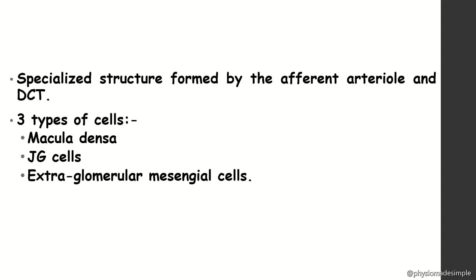Next are the juxtaglomerular (JG) cells, which release a hormone called renin — already discussed in long-term regulation of blood pressure. Third, the extraglomerular mesangial cells, which have contractile properties. They control GFR by contracting or relaxing to adjust filtration membrane pore size.